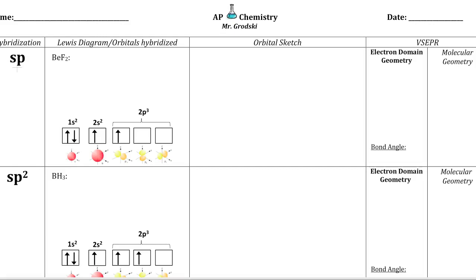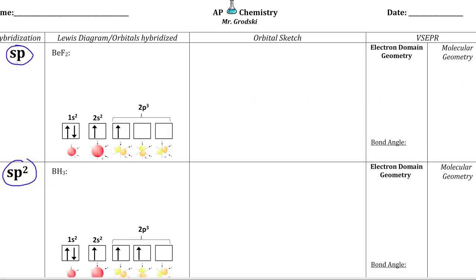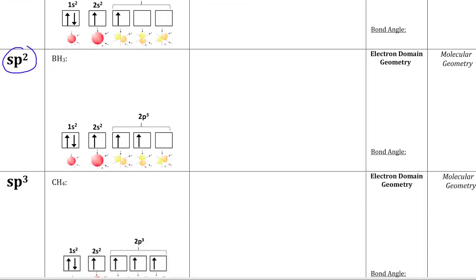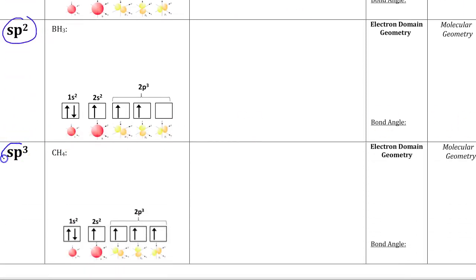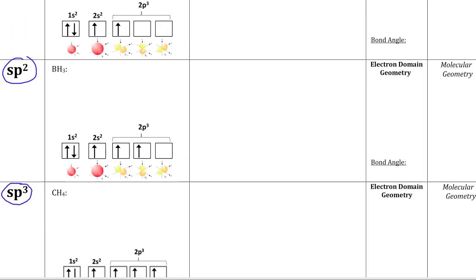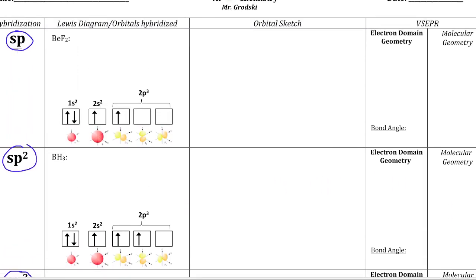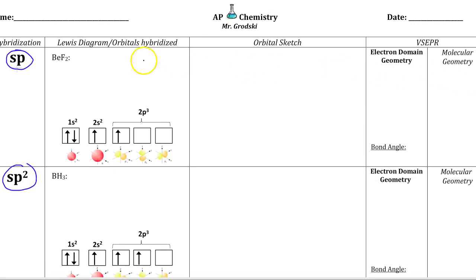Let's get started with reviewing SP, SP2, and SP3 hybridization side by side. This is very important valence bond theory that helps us explain what we know experimentally for the central atom. For instance, we start with BeF2.